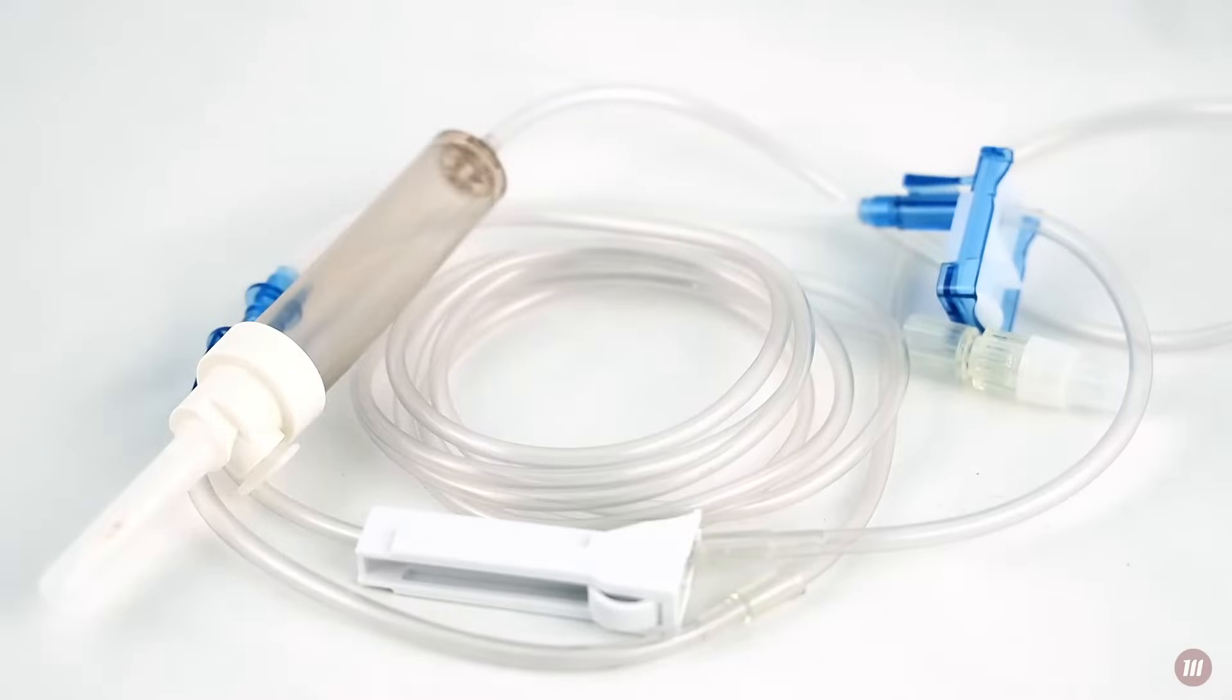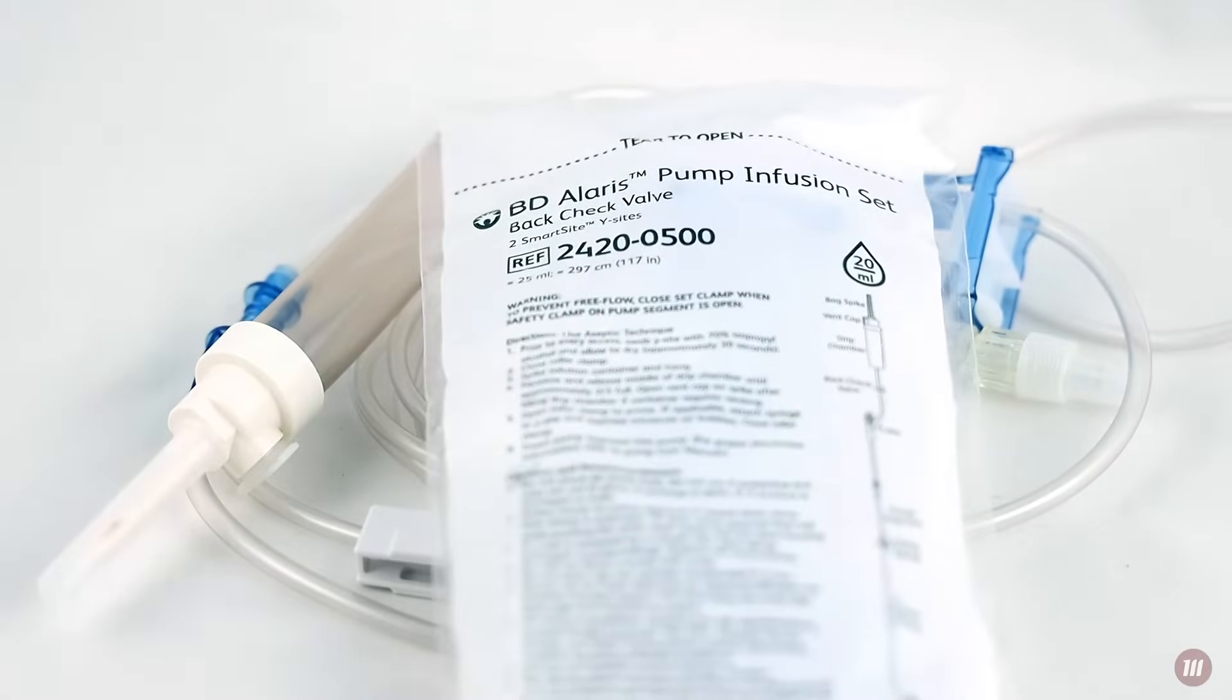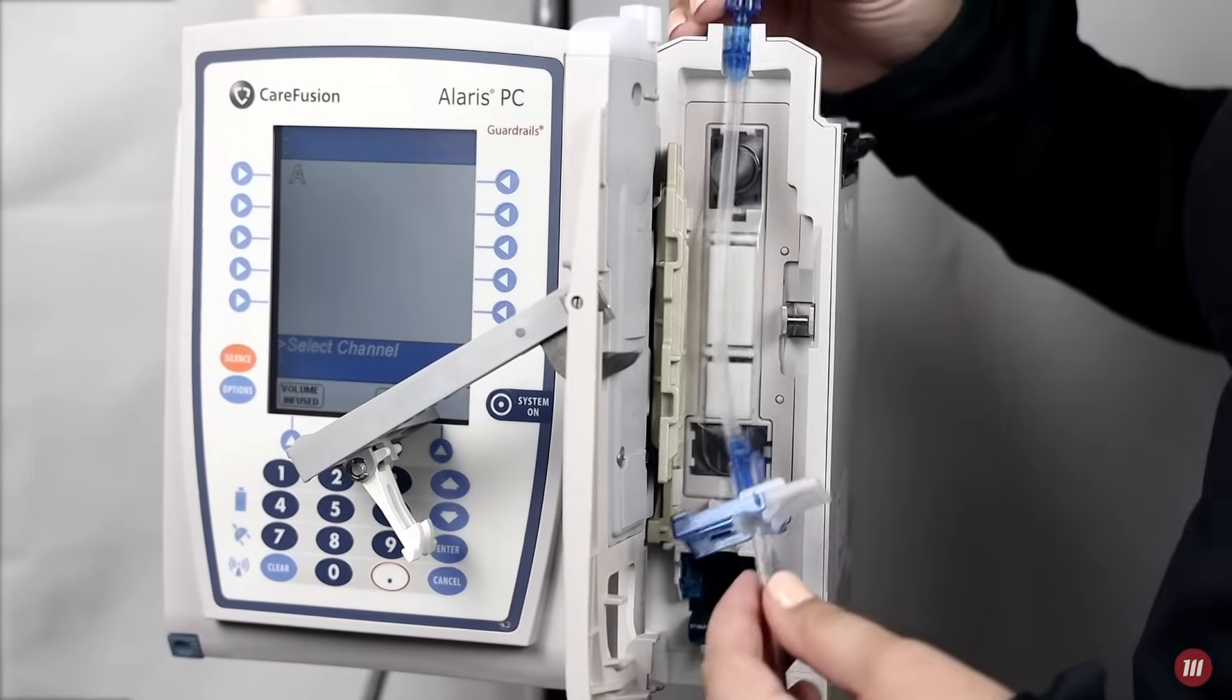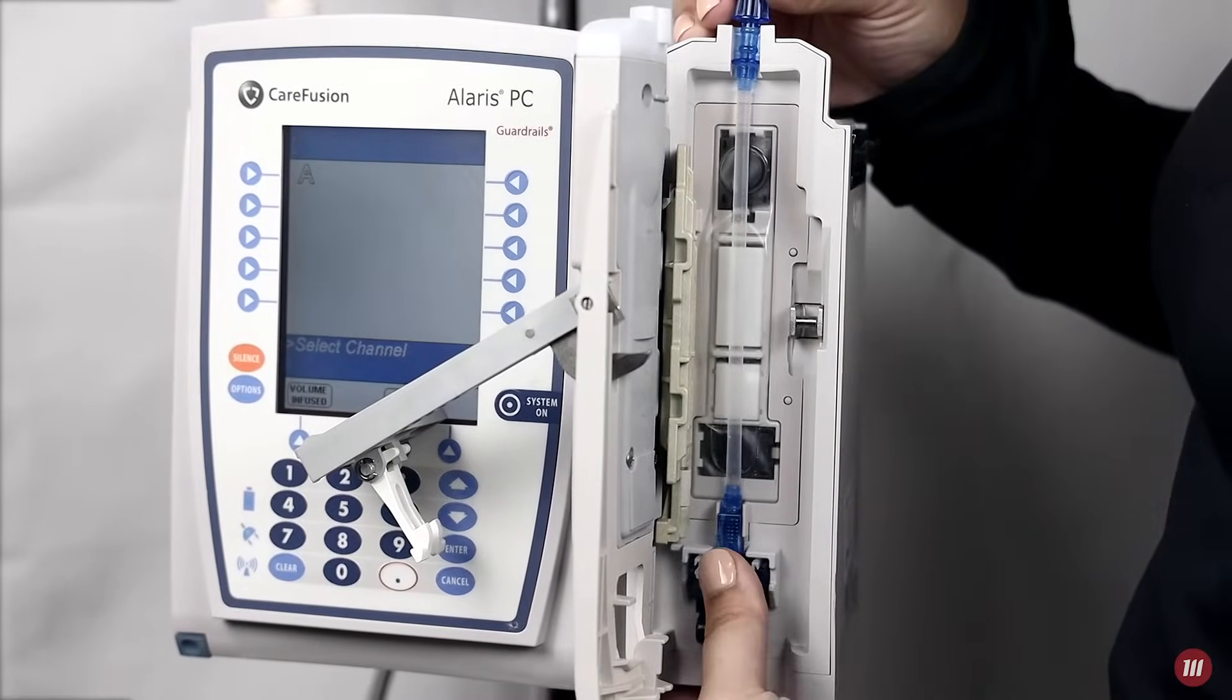The Alaris 8100 is compatible with a variety of BD Alaris dedicated tubing sets. Flow rates range between 0.1 and 999 milliliters per hour.